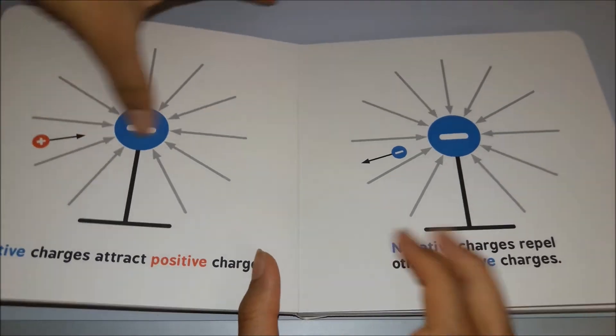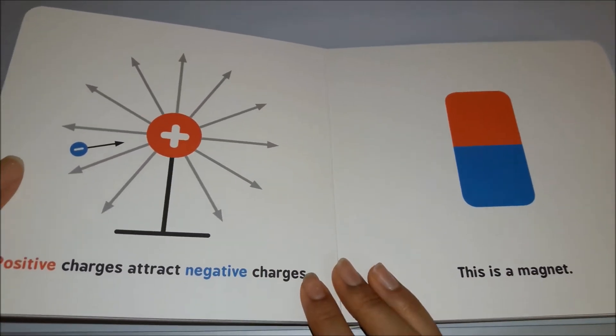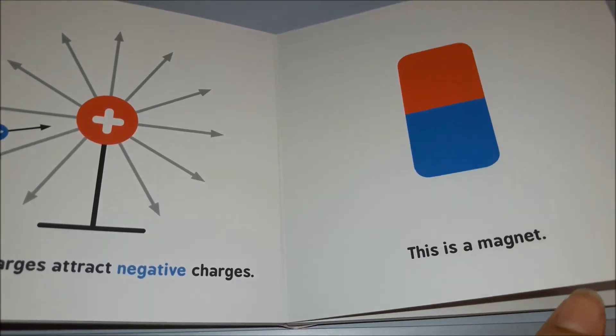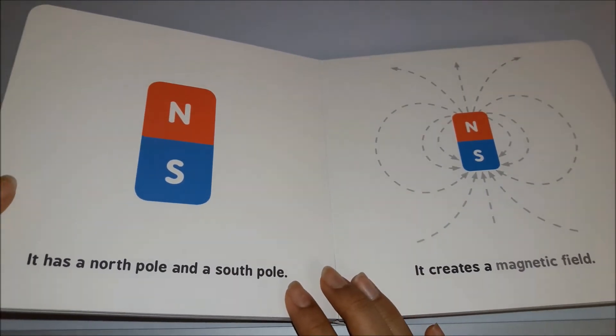Positive charges attract negative charges. This is a magnet. It has a north pole and a south pole.